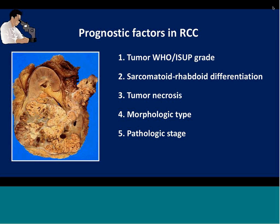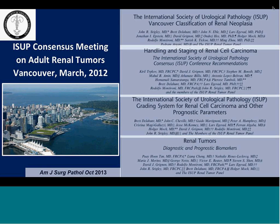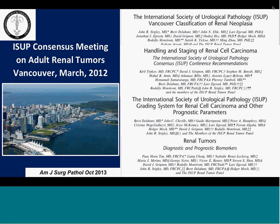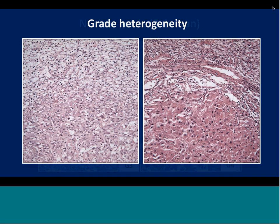Let's start with the WHO/ISUP grade. Most of what we now practice in kidney pathology was established at the ISUP consensus meeting on adult renal tumors, which has a Canadian stamp as it was held during the USCAP meeting in Vancouver in March 2012. The Furman grade has been in existence since 1982, and you're all familiar with grades 1 through 4. However, people recognized grade heterogeneity and many questions pertained to how Furman grade was used in practice.